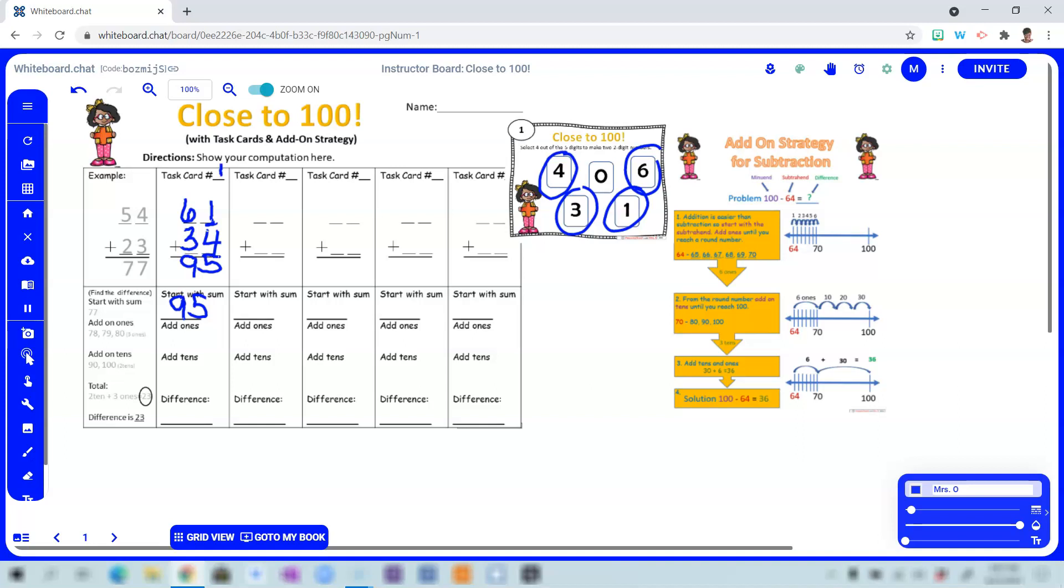And since we're at 95, add on ones: 96, 97, 98, 99, 100. Okay? So zero tens are needed, since we're at 100. And so the difference between 95 and 100 is five. So that's pretty close to 100.